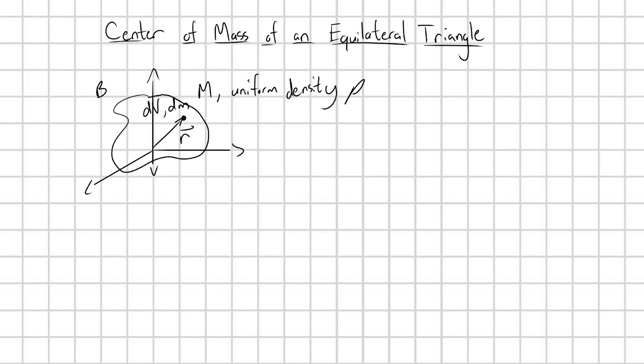First let's talk about uniformly dense objects in general. Consider that I have some arbitrary blob B with mass M and uniform density ρ. In this picture we can break this blob B into a bunch of infinitesimal mass elements of mass dm and point to them with position vectors r.